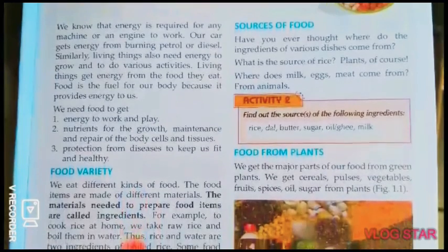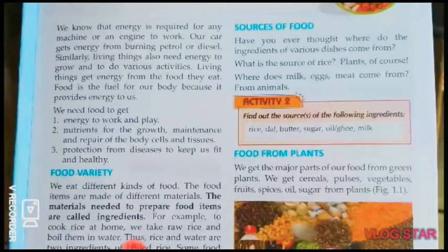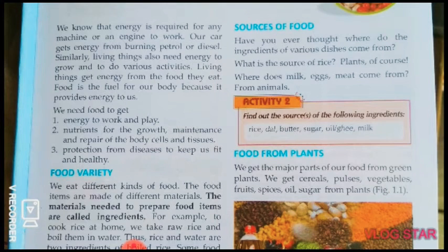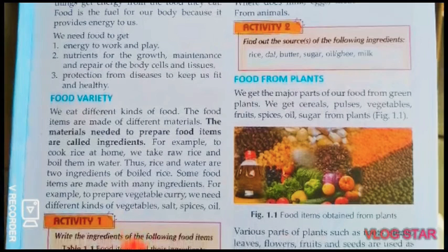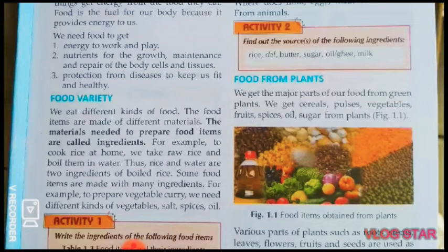Activity number two: find out the sources of the following ingredients. Rice — plants. Dal — plants. Butter — animals. Sugar — plants. Oil — plants. Ghee — animals. Milk — animals. Food from plants: we get the major part of our food from green plants. We get cereals, pulses, vegetables, fruits, spices, oil, sugar, etc. from plants.